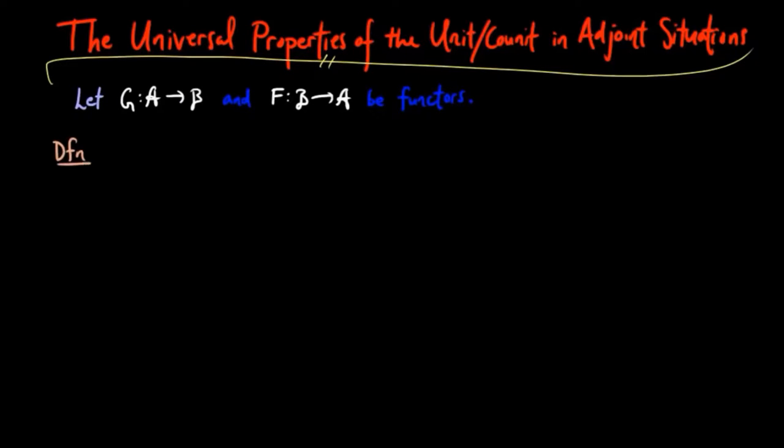The universal mapping property of the unit at a B object B occurs in the category of B over G. This category has B morphisms F from B to GA as objects,